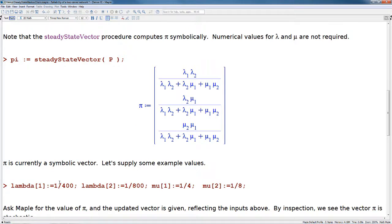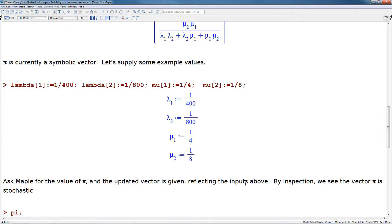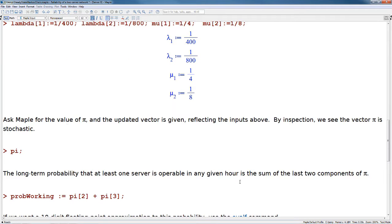If we were to specify values for lambda1, lambda2, mu1, and mu2, we could return an exact result. Now if we ask Maple for the value of pi, the updated vector is given reflecting the inputs above.